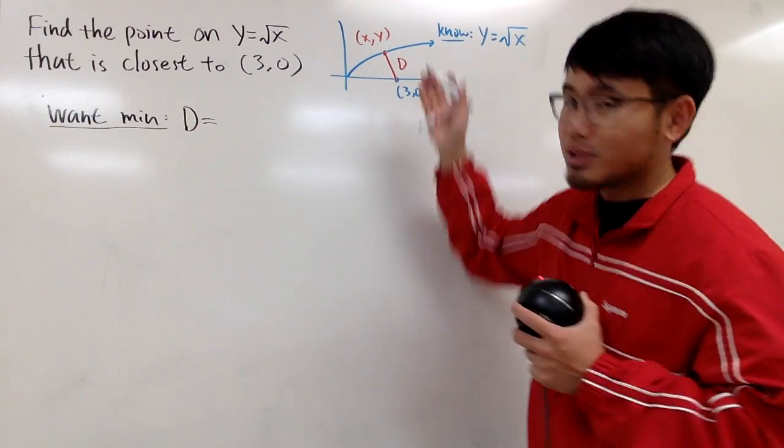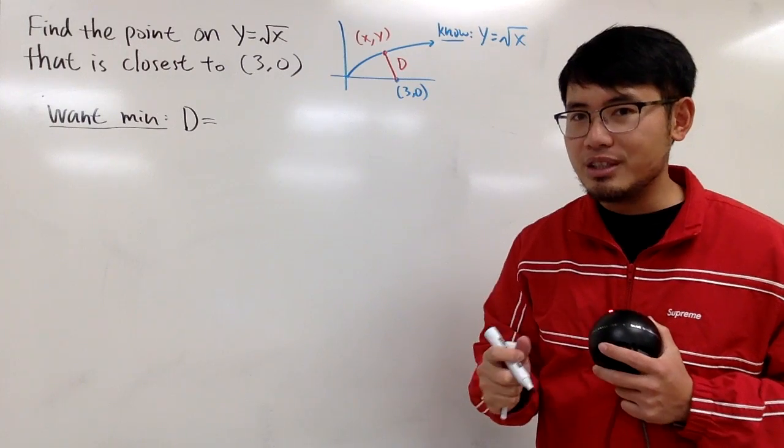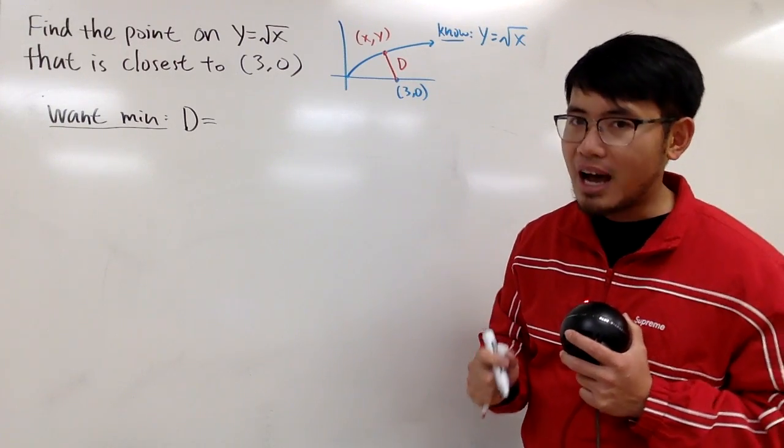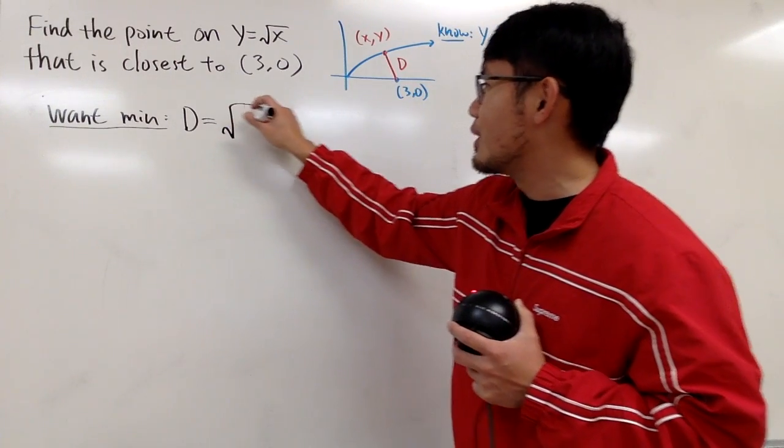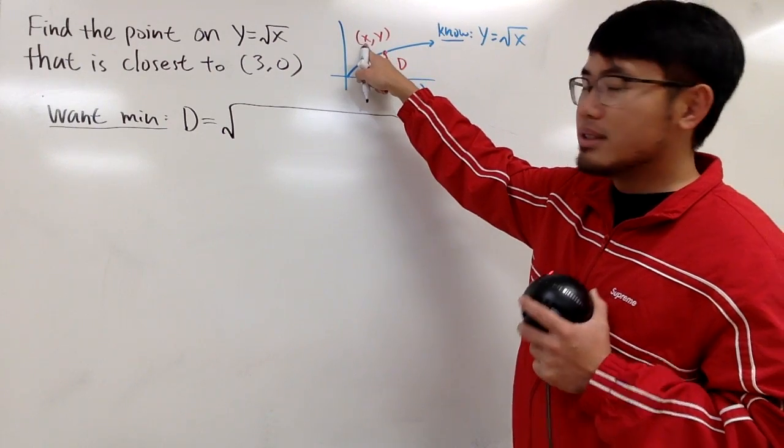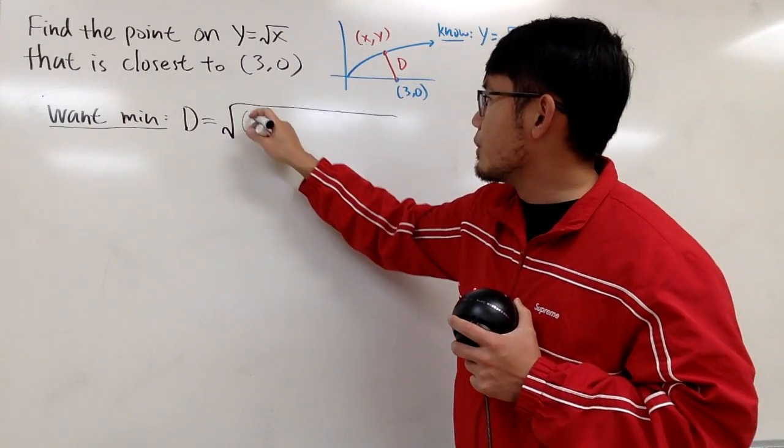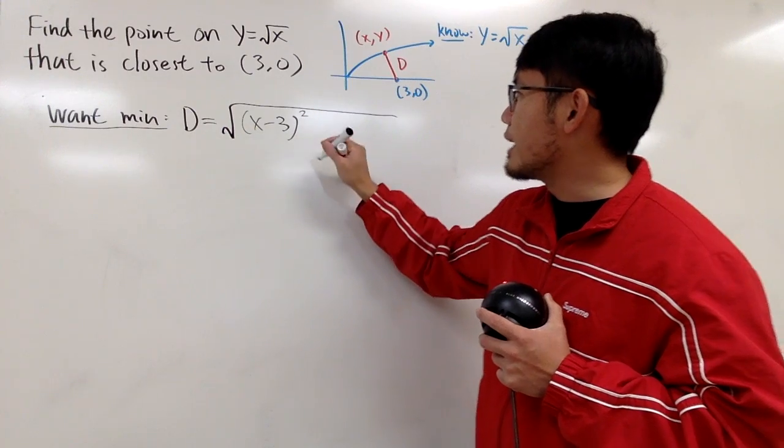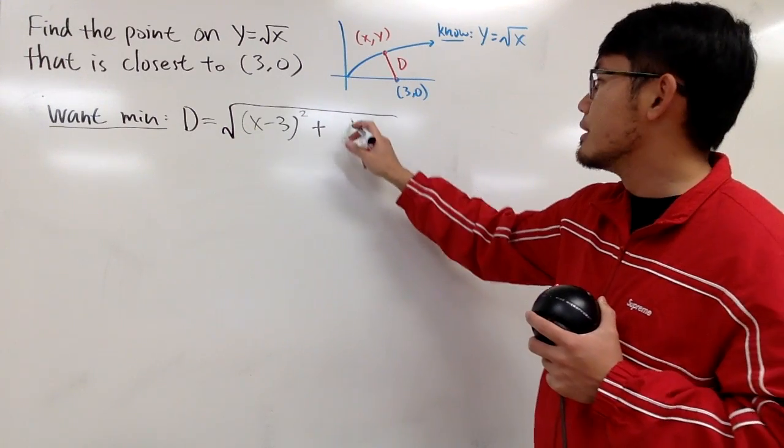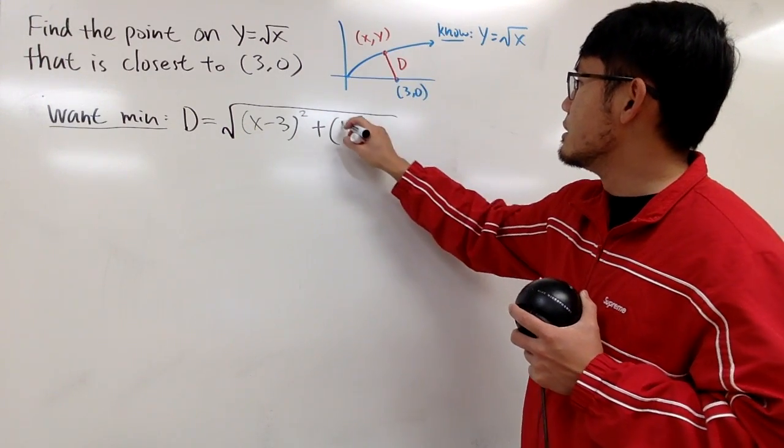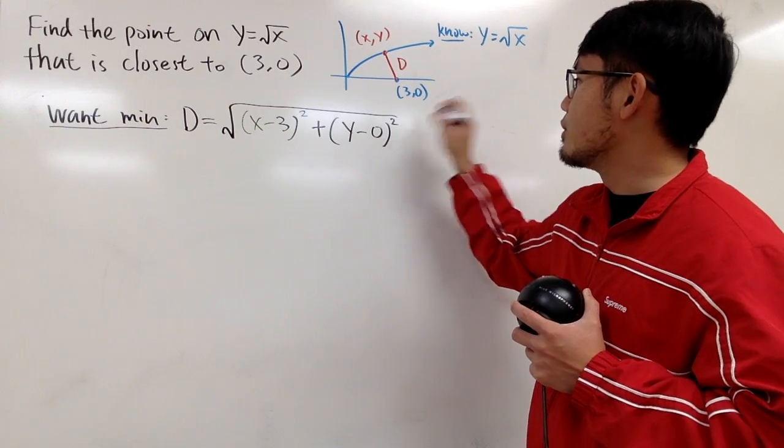And of course, this is just the distance between two points. We can use the distance formula. So we'll just take the square root here. And let's do the distance formula this way. Let's do x minus 3, so that's the first one. And don't forget to square that. And then you add the part, which is y minus 0, like this. And don't forget to square that.